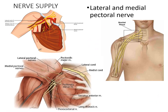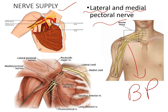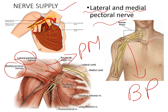That was about the origin and insertion of pectoralis major. Now we will study the nerve supply of this muscle. It is supplied by the lateral and medial pectoral nerves, which are branches of the brachial plexus. Both the lateral pectoral nerve and the medial pectoral nerve supply the pectoralis major muscle.